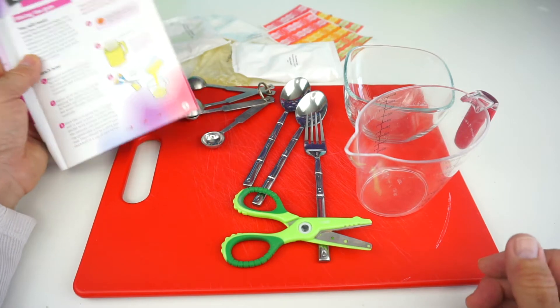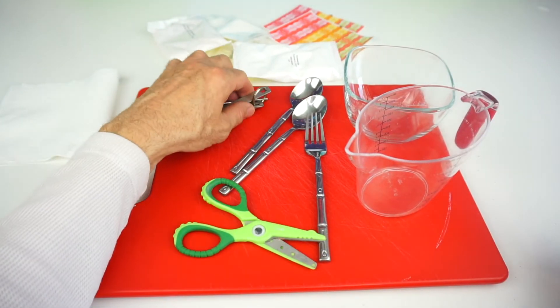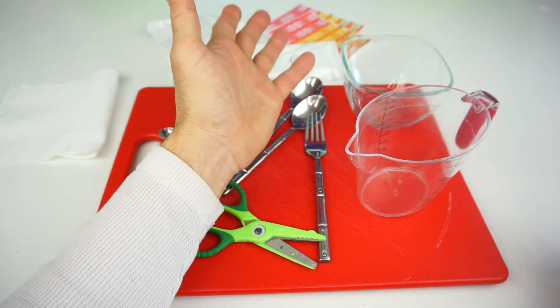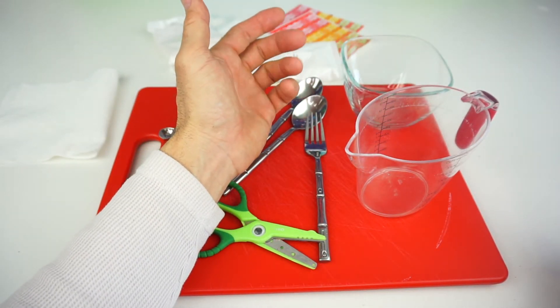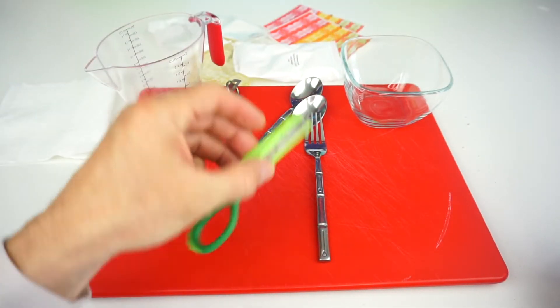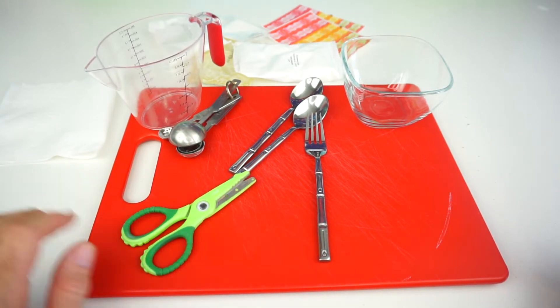So here are some of the items that we will be needing for our experiment. We're going to need some measuring spoons, a glass container, or you can also use a paper or a throw away container because it can get sticky in a measuring cup. A pair of scissors. A nice area. This is a cutting board to work on.